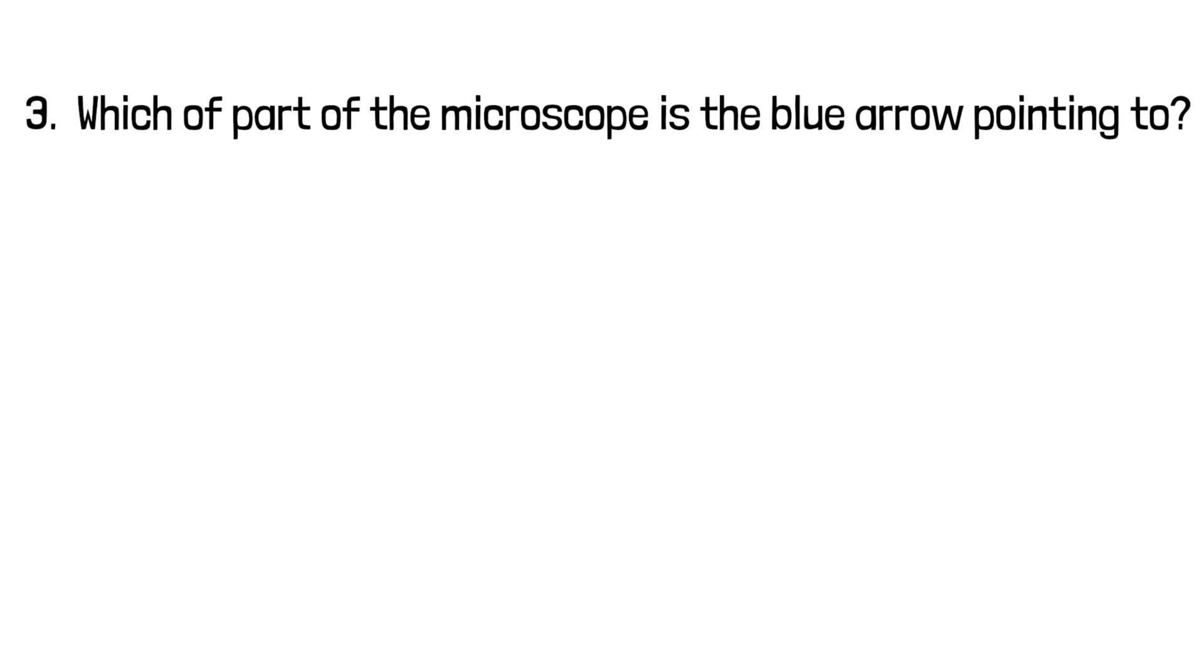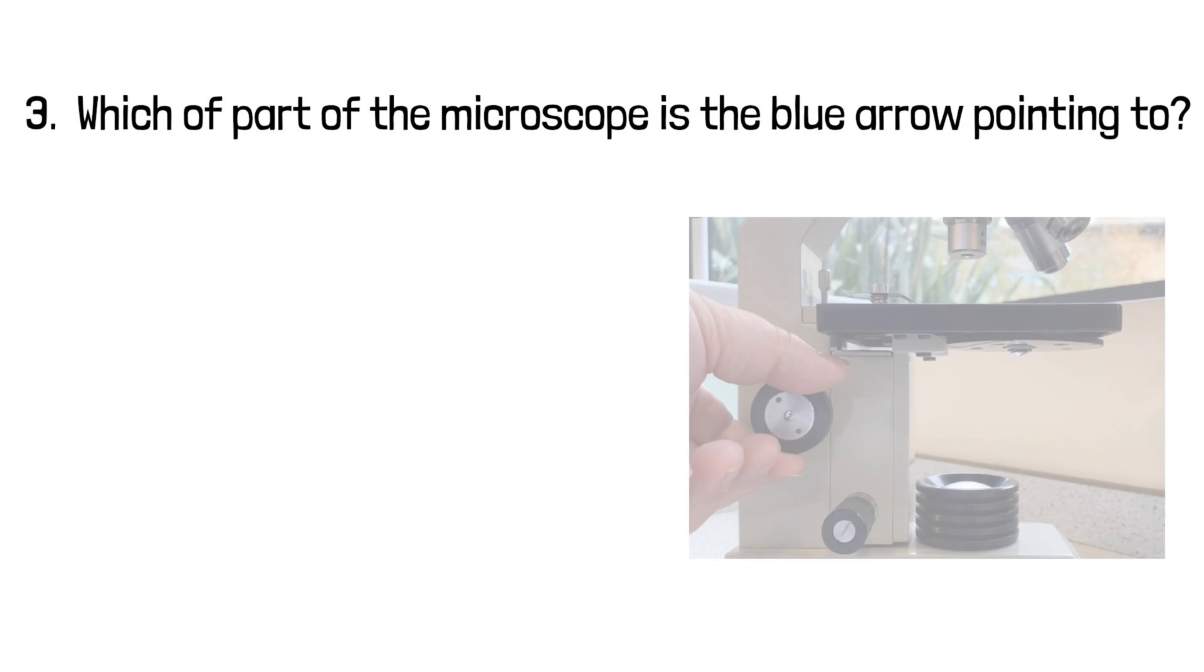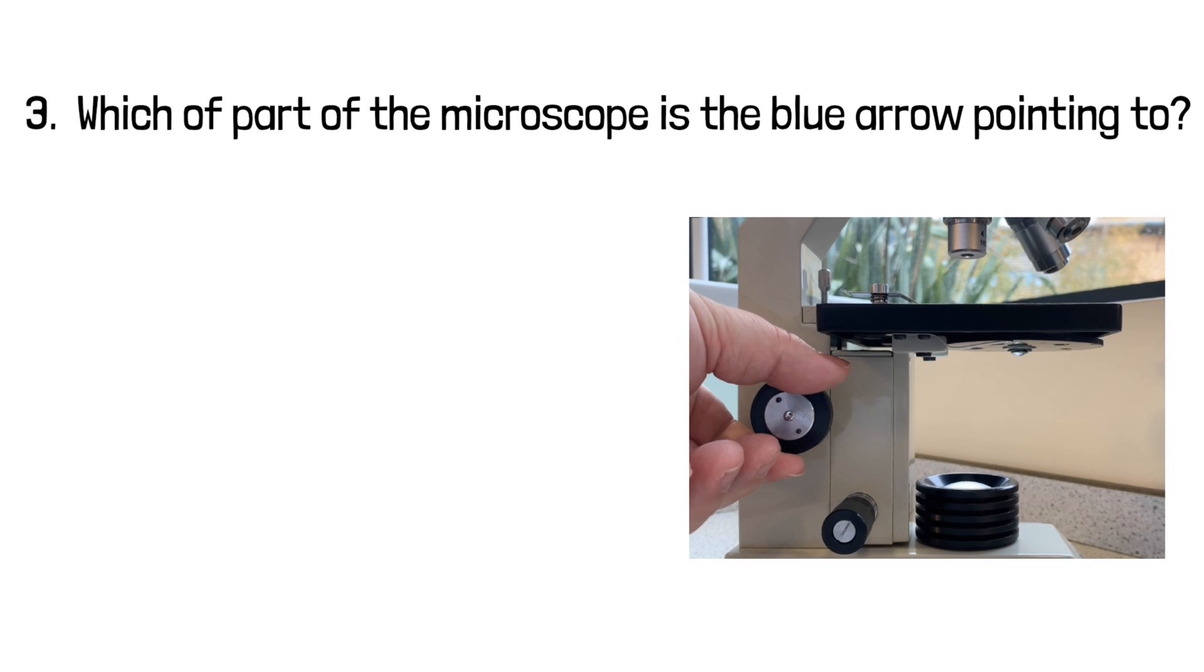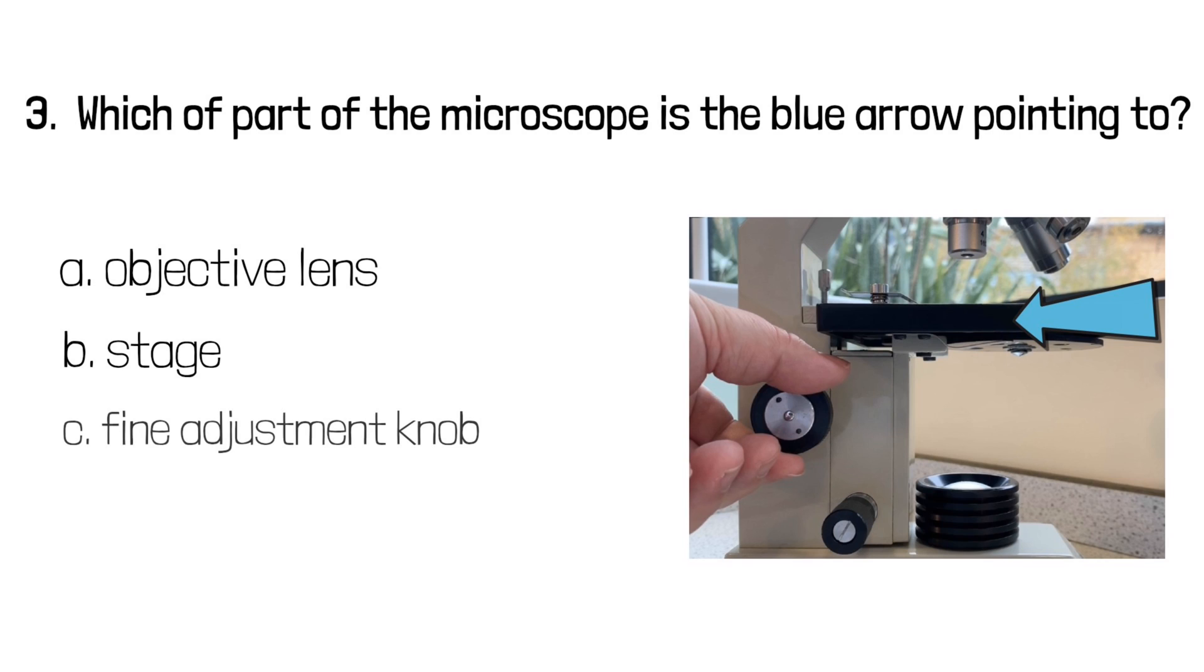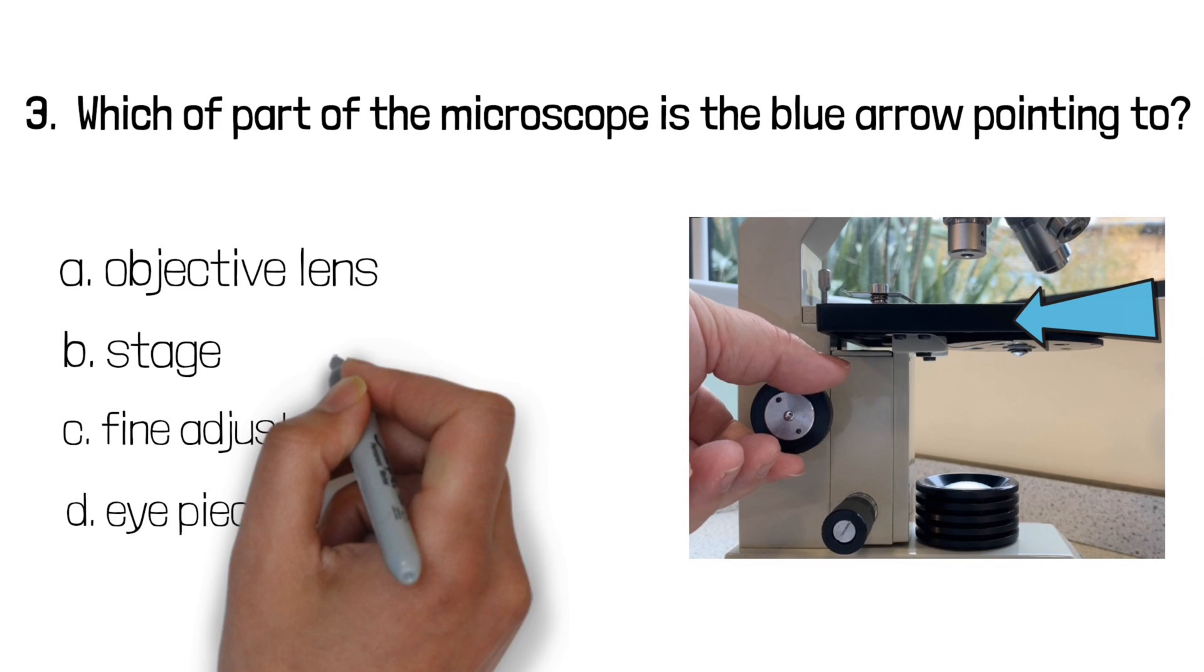Question three. Which part of the microscope is the blue arrow pointing to? Is it a) the objective lens, b) the stage, c) the fine adjustment knob, or d) the eyepiece? It was b) the stage.